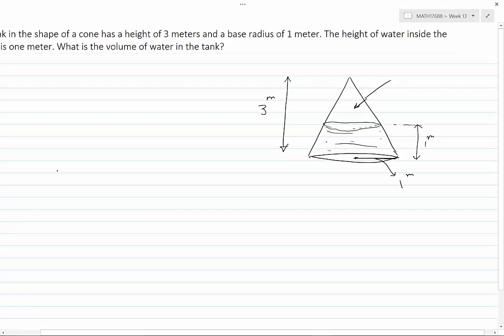Now let's find the volume of the tank. It is one-third area of base, which is π times 1 squared because the base is a circle with radius 1, times height which is 3 meters, and this becomes π cubic meters.